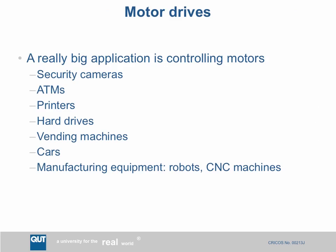A really big application of microcontrollers is motor drives, and motor drives are everywhere: in security cameras for pan and tilt, in ATMs, in printers, in computer hard drives, in vending machines, in cars for windows and air conditioning vents, in manufacturing equipment, robots, automated guided vehicles, and CNC machines. Digital motor drives are everywhere in the world — there must be billions of them. It is a really big market.